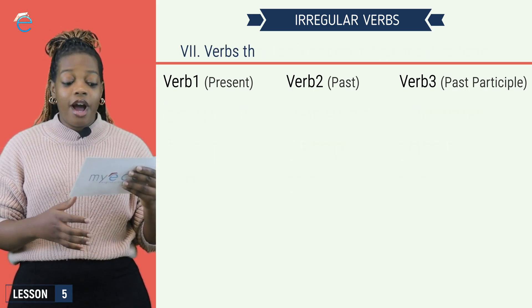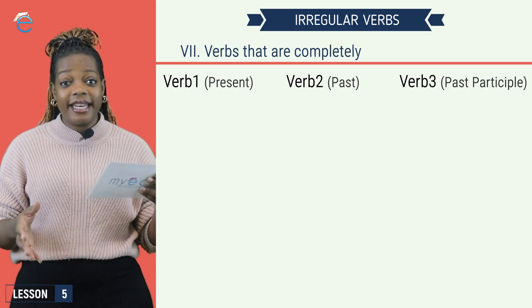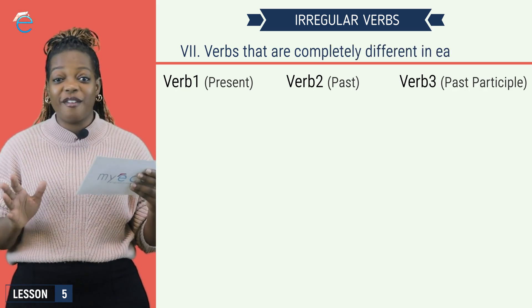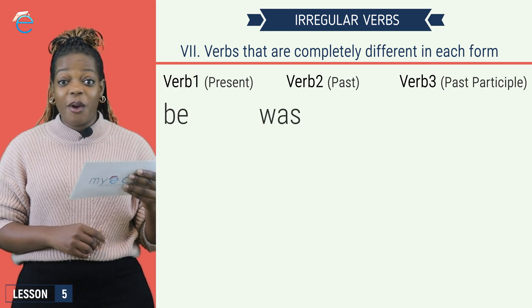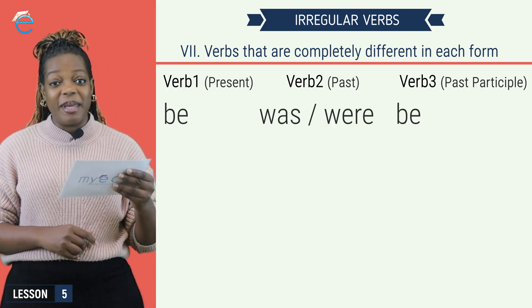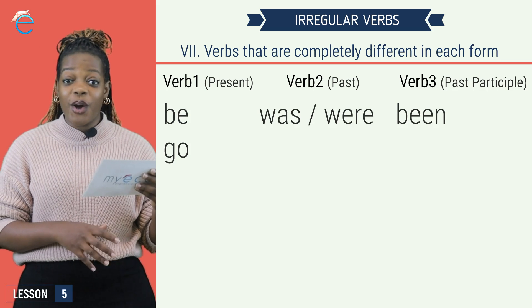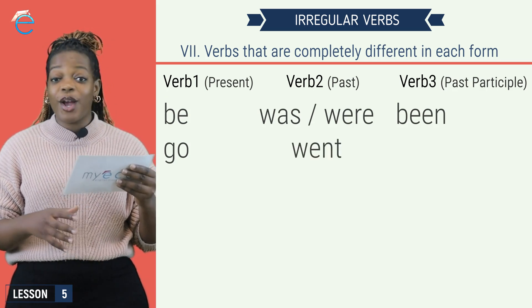Group 7 are verbs that are completely different in all three forms. Be, was, were, been. Go, went, gone.